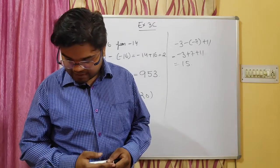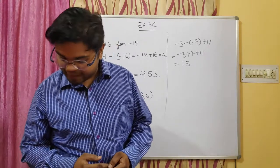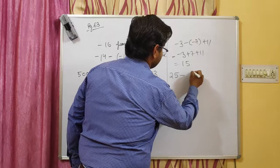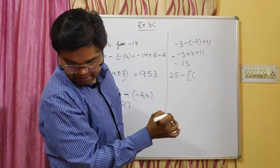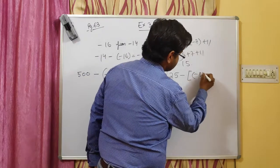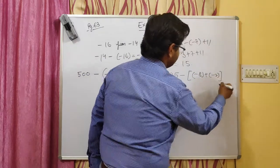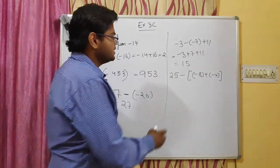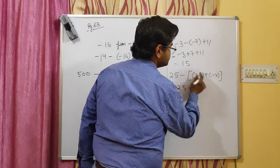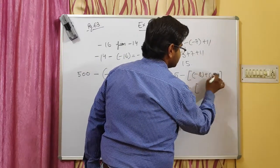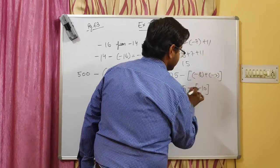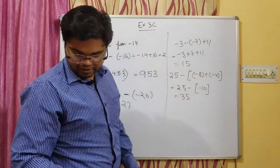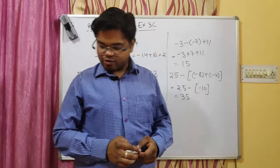Question 5, part 4: 25 minus bracket, then inner bracket minus 8 plus minus 2. First solve inside: minus 8 plus minus 2 equals minus 10. The minus minus removes the bracket and becomes plus, so the inner bracket gives plus 10, and 25 plus 10 equals 35. Wait — the answer comes out to be 25 plus 10.